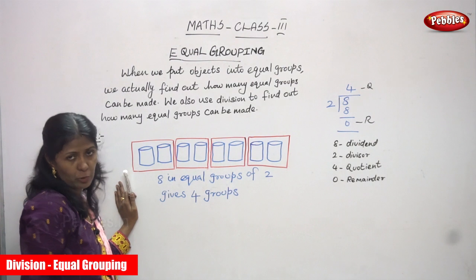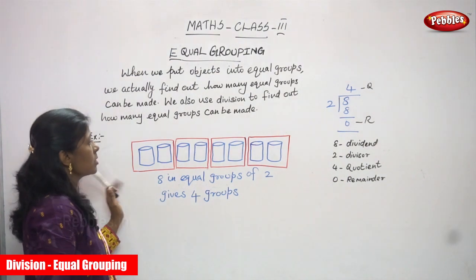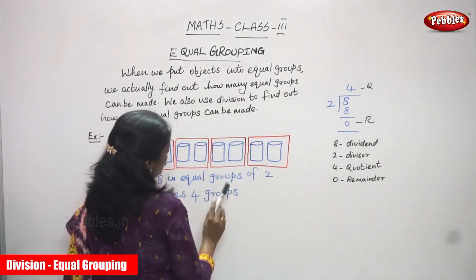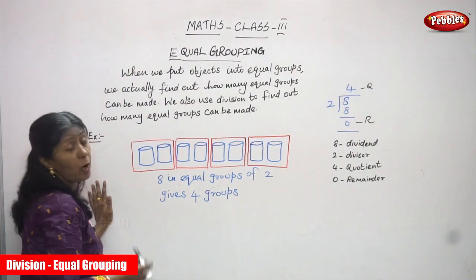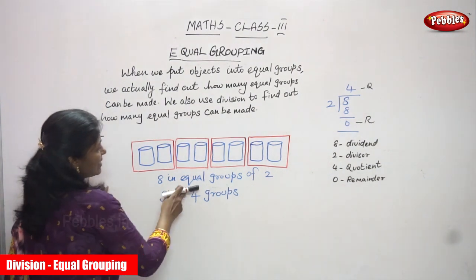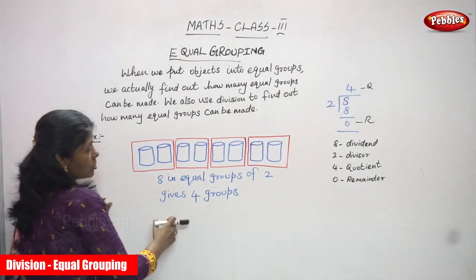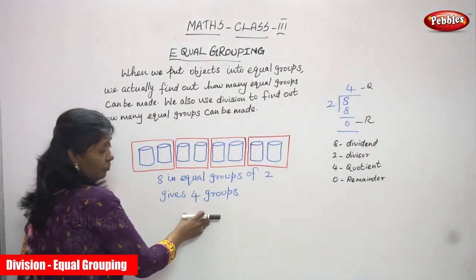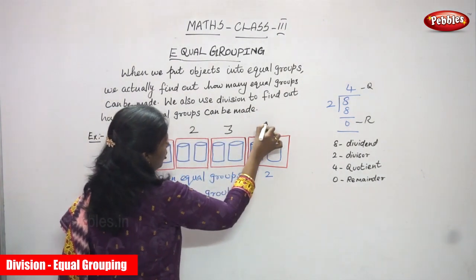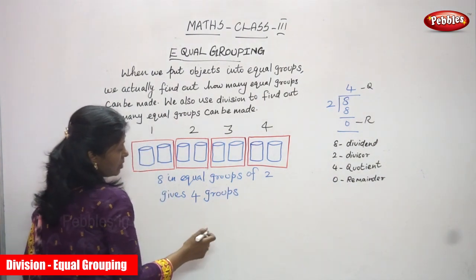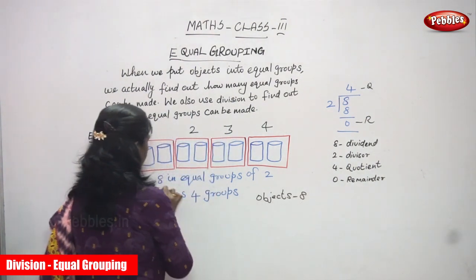So when we put objects into equal groups — 1, 2, 3, 4, 5, 6, 7, 8 — we have 8 objects. We put 8 objects into equal groups and find out how many equal groups are formed. 8 in equal groups of 2 gives 4 groups. First group, second group, third group, and fourth group.